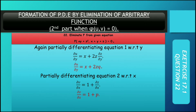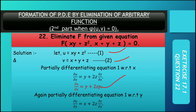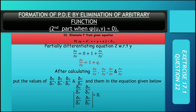du/dy निकालते हैं — du/dy = x + 2zq। Notations जो हमारे हैं: du/dy = q, dz/dx = p। इस notation को हम यहाँ use करेंगे। अब equation 2 देखें — v वाला: x + y + z को partial differentiate करते with respect to x। तो y → 0, x → 1, और dz/dx = p। So d/dx = 1 + p। और d/dy = 1 + q।